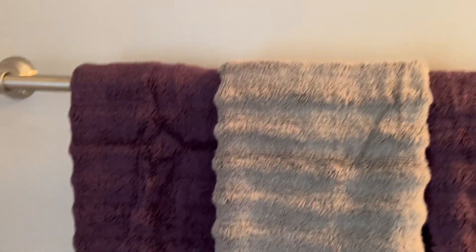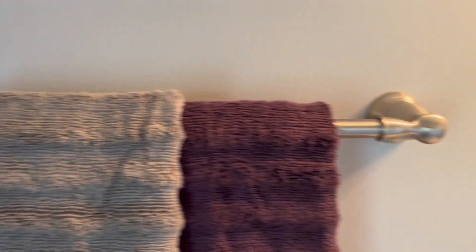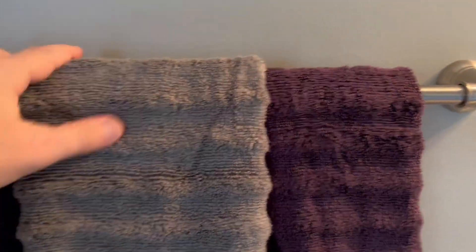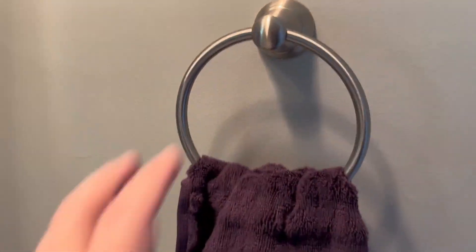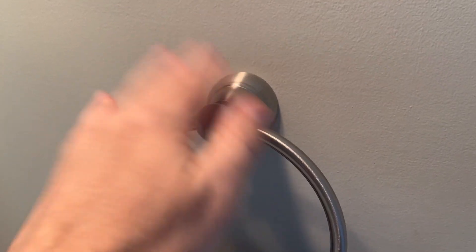So it looks nice. We've got three hand towels on that. And then the third piece is going to be your towel ring. Again, it's just solid metal, nice ring.